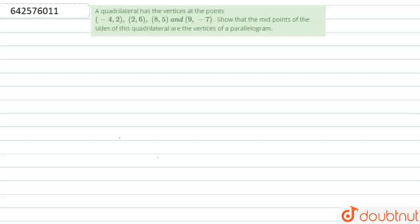In this question, it is given that there is a quadrilateral with vertices at the points (-4, 2), (2, 6), (8, 5), and (9, 7). We have to prove that the quadrilateral formed by joining the midpoints of the sides of this quadrilateral will form a parallelogram.